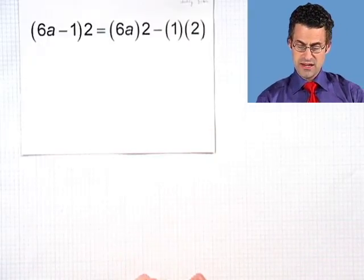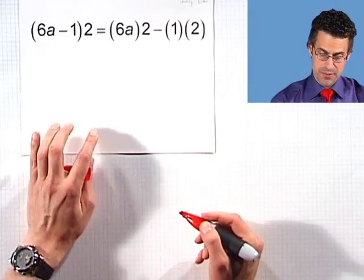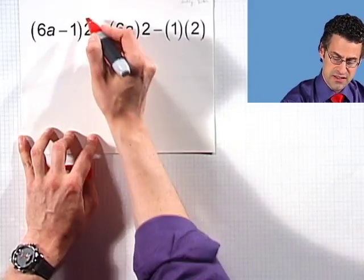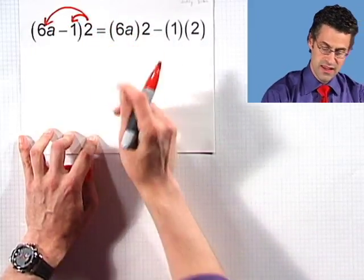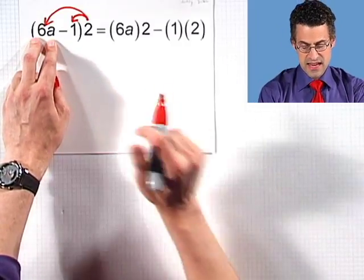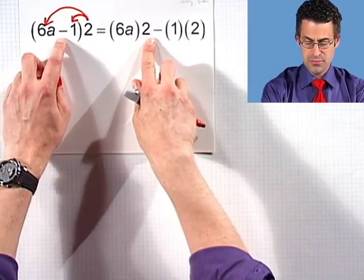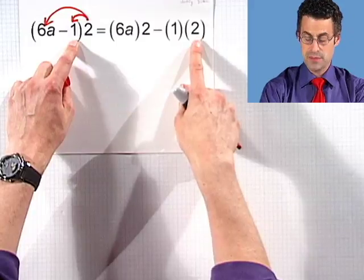Well, what we're doing here is using the distributive property. Two times this difference we can actually distribute, and we'd see 6a times 2 minus 1 times 2.